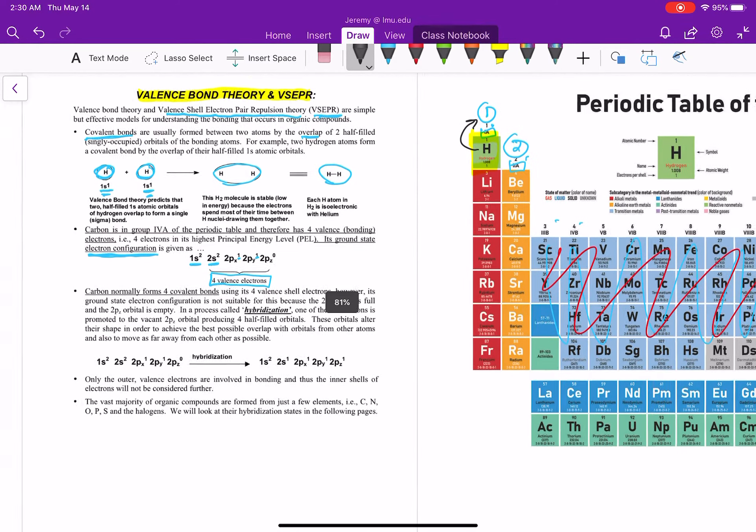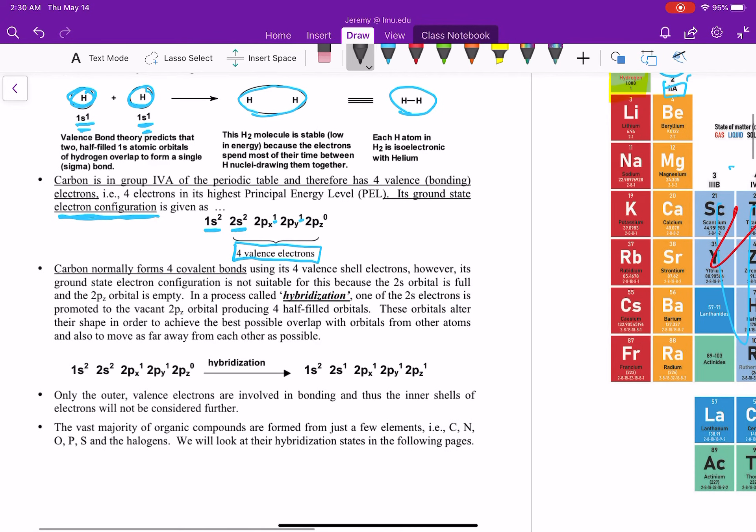So the first thing is being able to understand and determine how many valence electrons your atom will have. And we do that from the periodic table. Carbon is normally going to form 4 covalent bonds because it has 4 valence electrons. What's interesting about this is electron configuration is not really good to talk about how bonds are made, because these orbitals are going to hybridize.